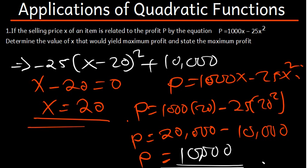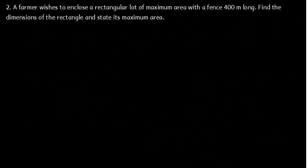So the value of X is 20 and the maximum profit is 10,000. This is the application of quadratic functions. The second question says: a farmer wishes to enclose a rectangular lot of maximum area with a fence 400 meters long — meaning that is the perimeter. Find the dimensions of the rectangle and state its maximum area.